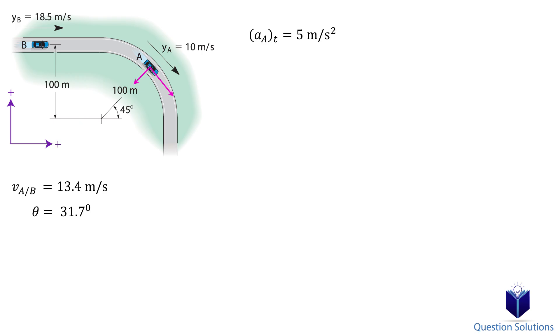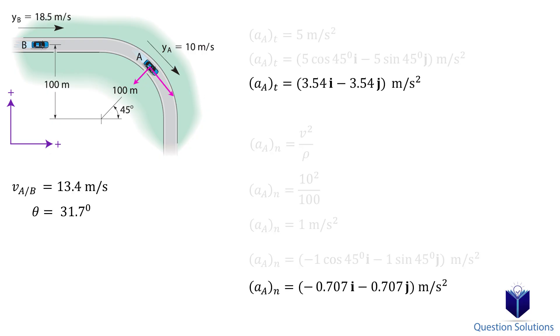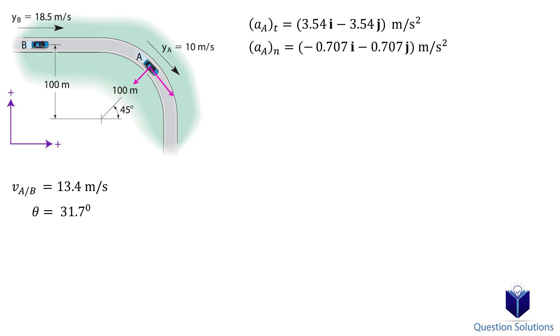The normal acceleration can be found by using this equation. Let's plug in everything we know from the question and the diagram. The acceleration can be written in components using both the normal and tangential acceleration. So for the tangential acceleration, we have the i component and the j component. For the normal acceleration, we have these components. Let's simplify them. The acceleration can be written as the addition of these components.